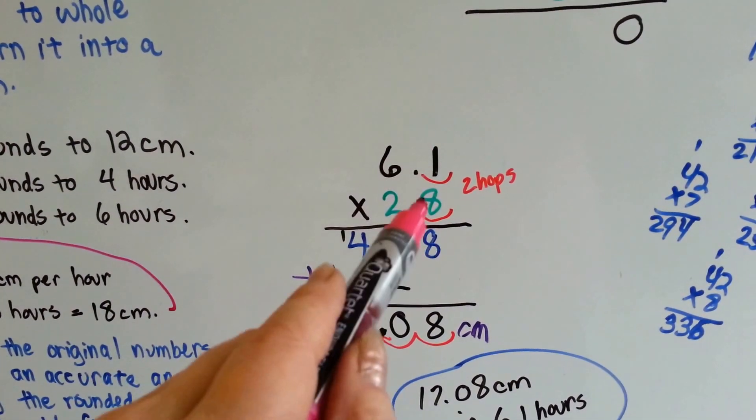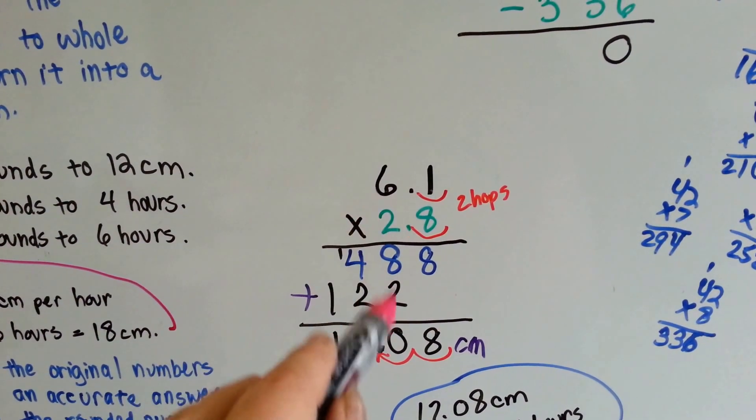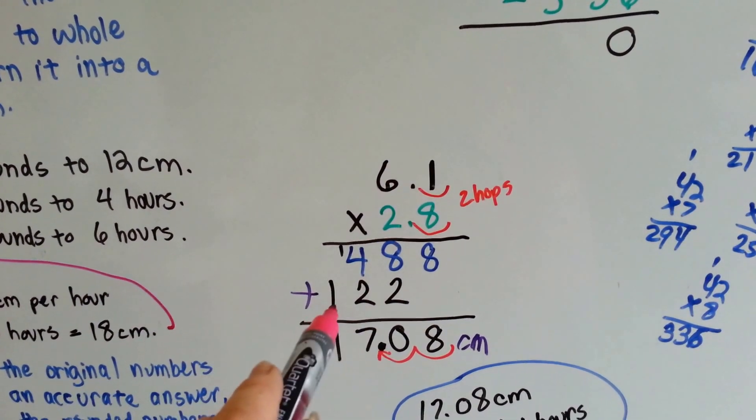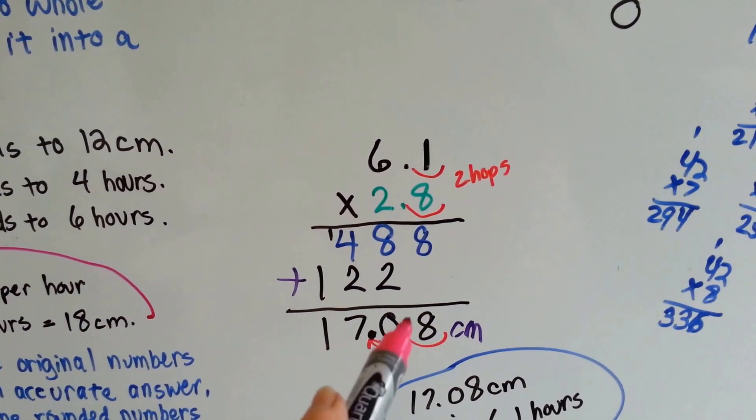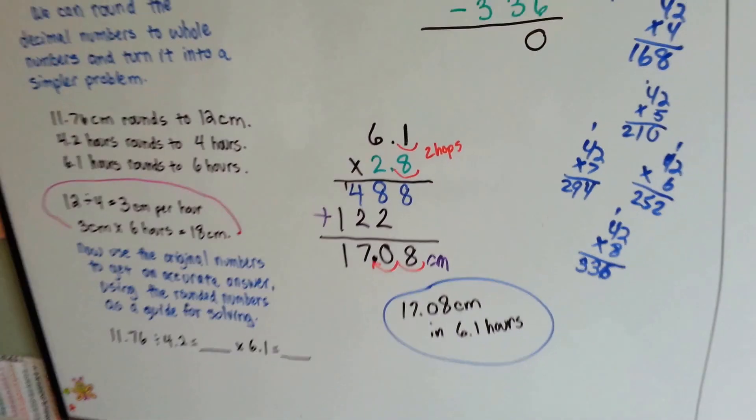8 times 1 is 8. 6 times 8 is 48. Now that we're multiplying in this column, the answer goes in this column. 2 times 1 is 2. 2 times 6 is 12. We add this all up and get 17.08 cm in 6.1 hours.